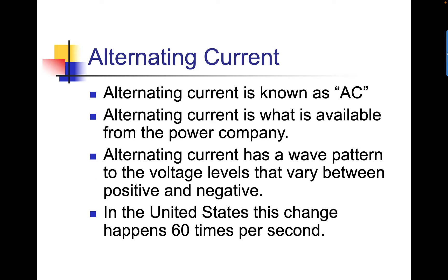Alternating current is known as AC. Alternating current is what's available from the power company. Alternating current has a wave pattern to the voltage levels that vary between positive and negative. In the United States, this change happens 60 times per second, otherwise known as 60 hertz.